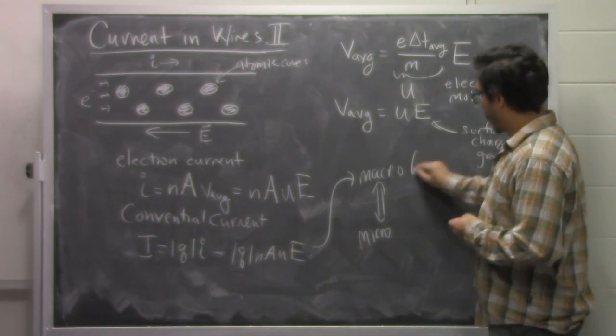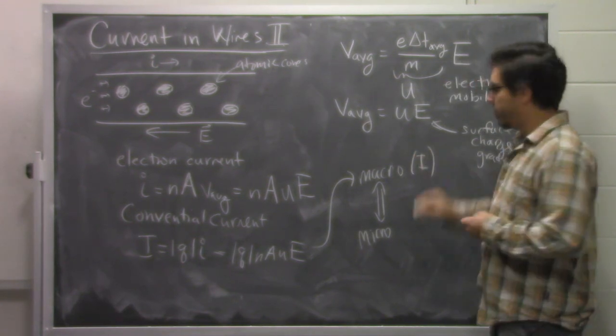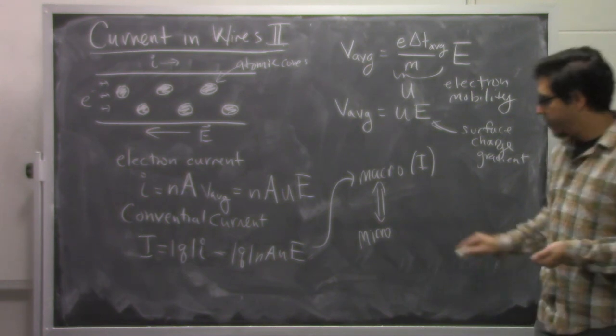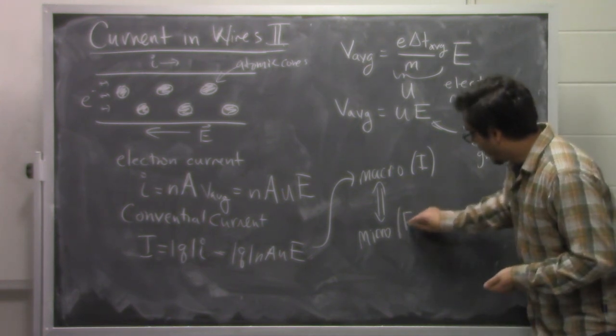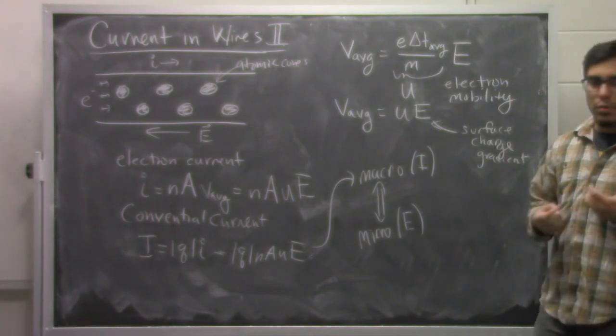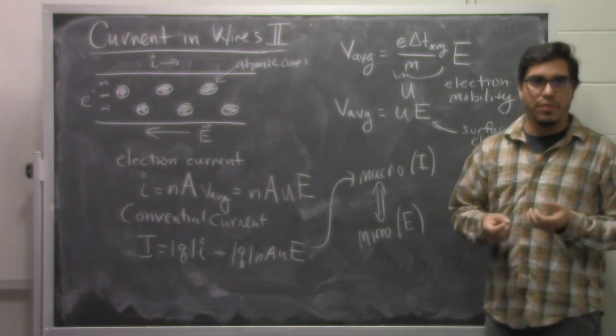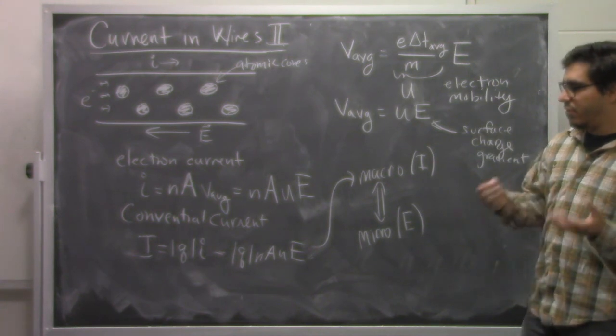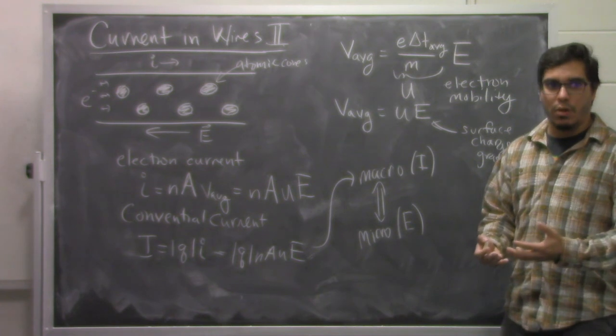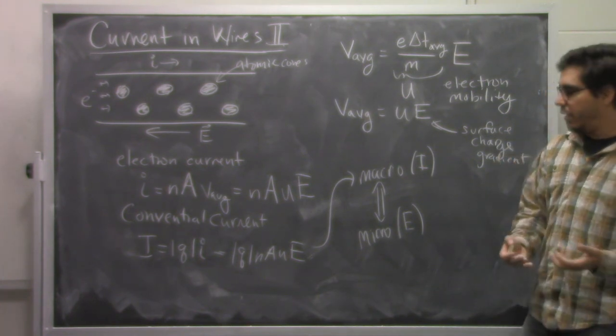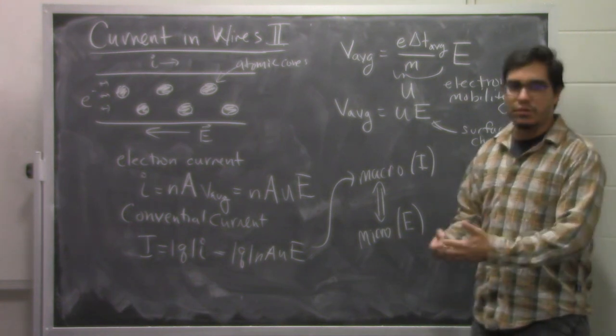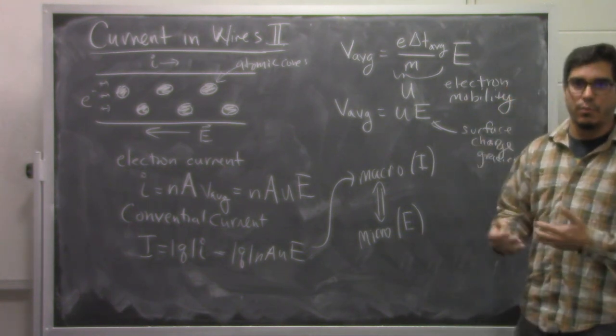The macroscopic world is things like currents, which we can measure with physical devices like multimeters. The micro world has this idea of the electric field, which is this thing that pushes around very small things like electrons. And so what this derivation does for us is it helps us understand how the thing we actually measure coming out of the wall or the thing that we measure when we're in the laboratory relates to the fundamental underlying physics that actually pushes and pulls electrons around in the wire.